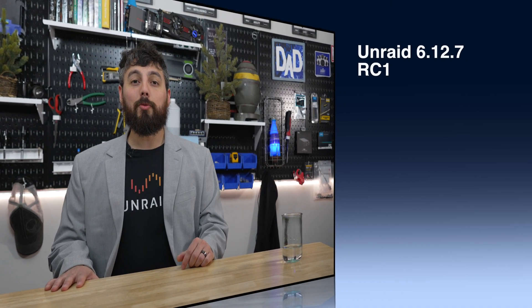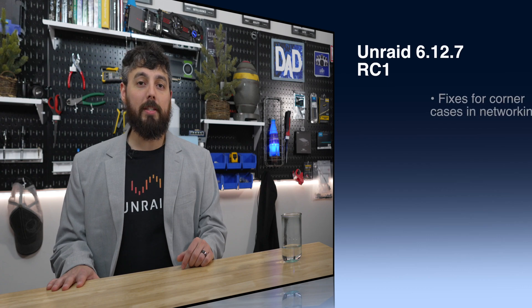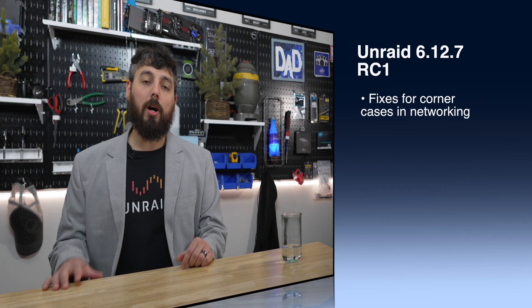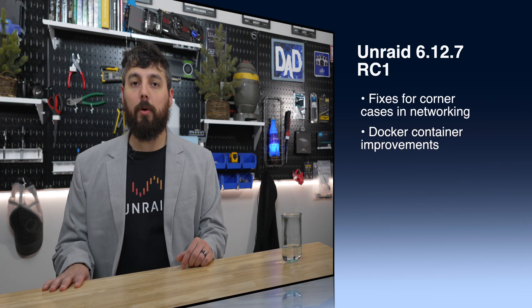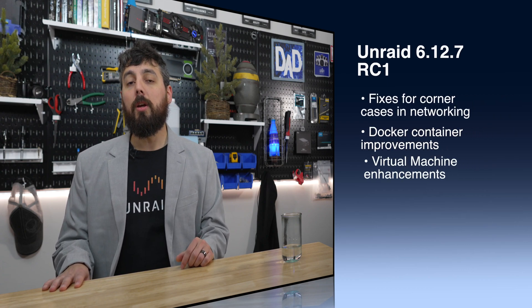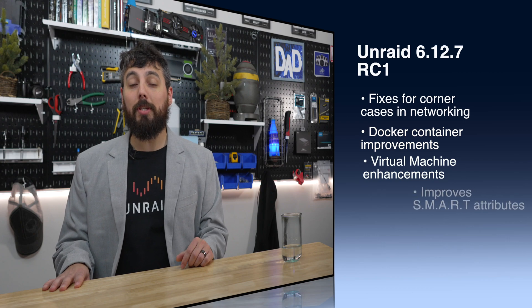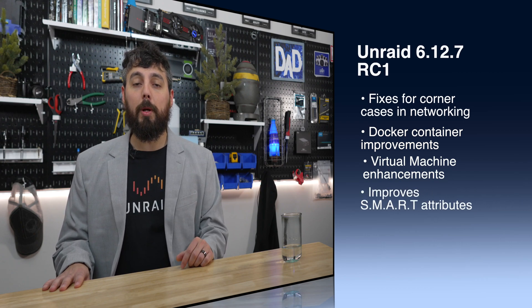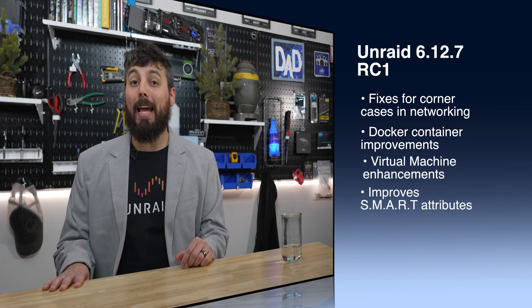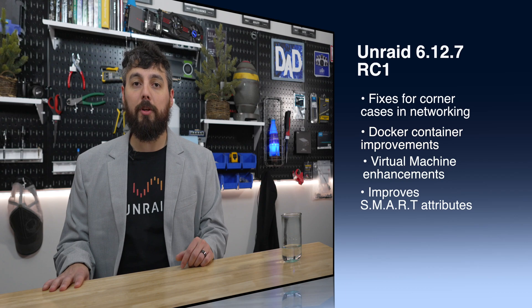Unraid 6.12.7 Release Candidate 1 offers fixes for edge case network issues, Docker containers, and virtual machines. There's also improvements to smart attribute handling for NVMe and SSD drives.